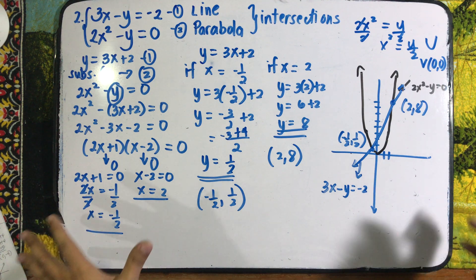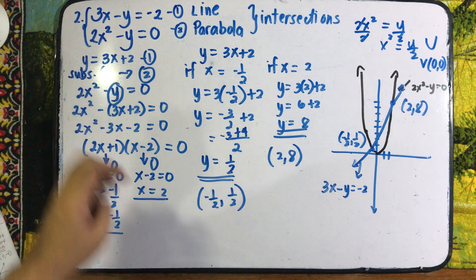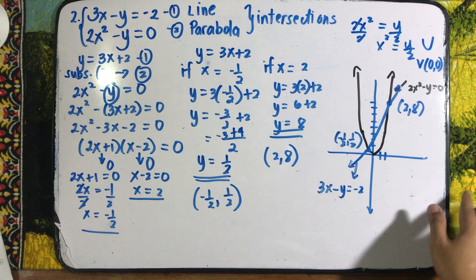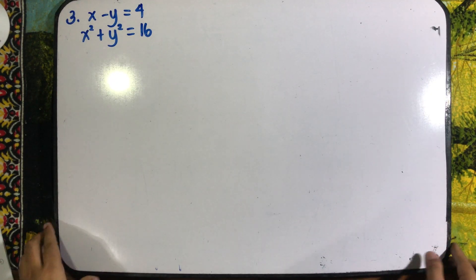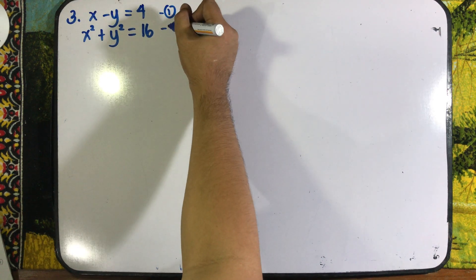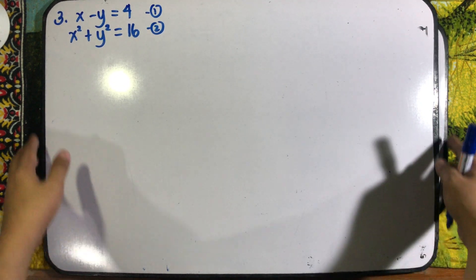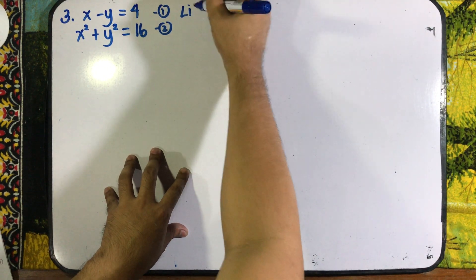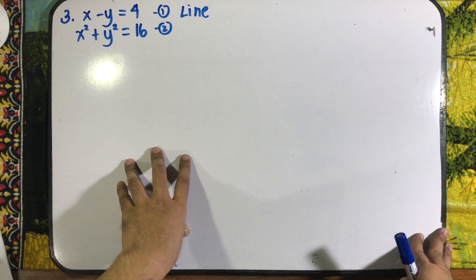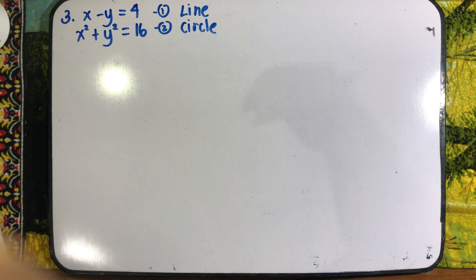I hope this is clear. This is the answer for the systems of equations. Whenever you are given 3x minus y equals negative 2 and 2x squared minus y equals 0, we have two solutions because they have two intersections. For the last example, we are given x minus y equals 4 and x squared plus y squared equals 16. The first equation is a line. The second equation — since both variables are squared with the same coefficient — is a circle.